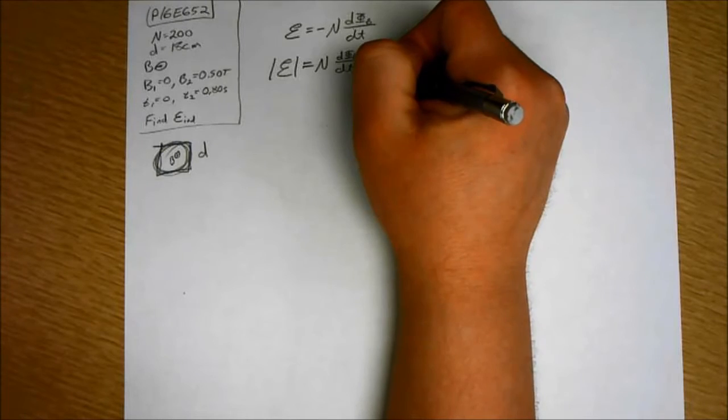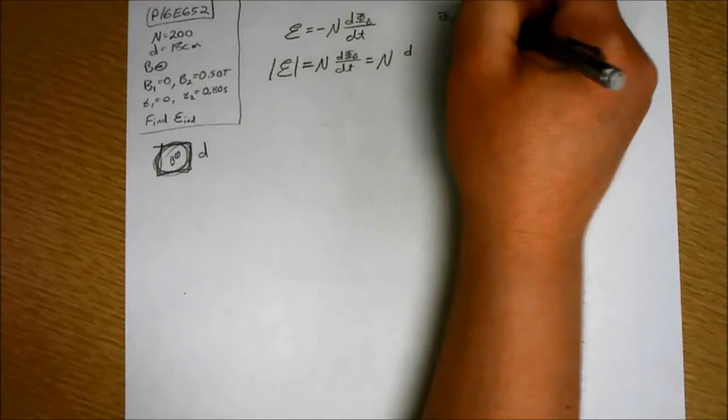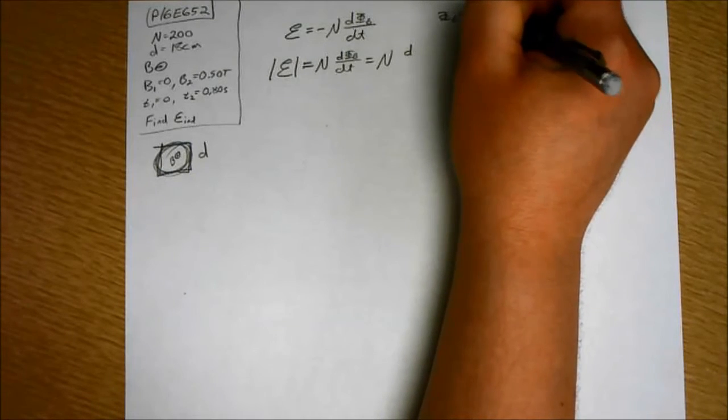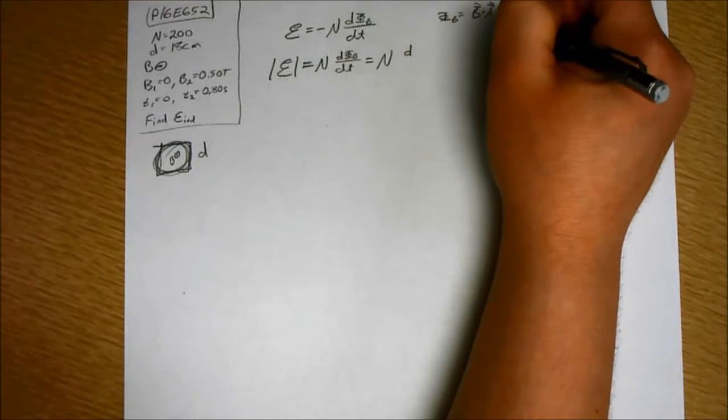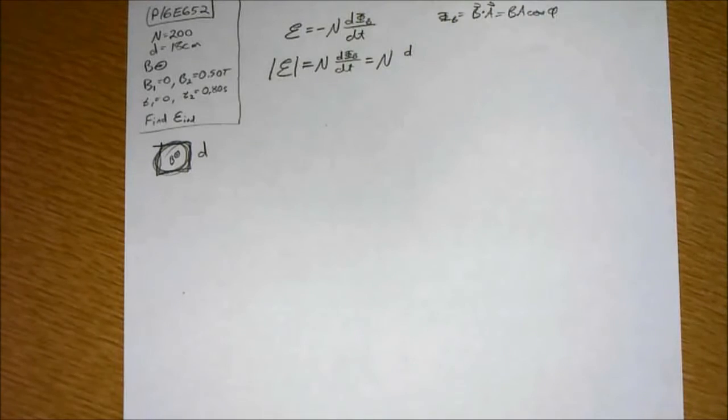Okay, so let's expand on this. That's N times d. What is magnetic flux? That is equal to B dot A or B A cosine of phi where phi is the angle between B and A.